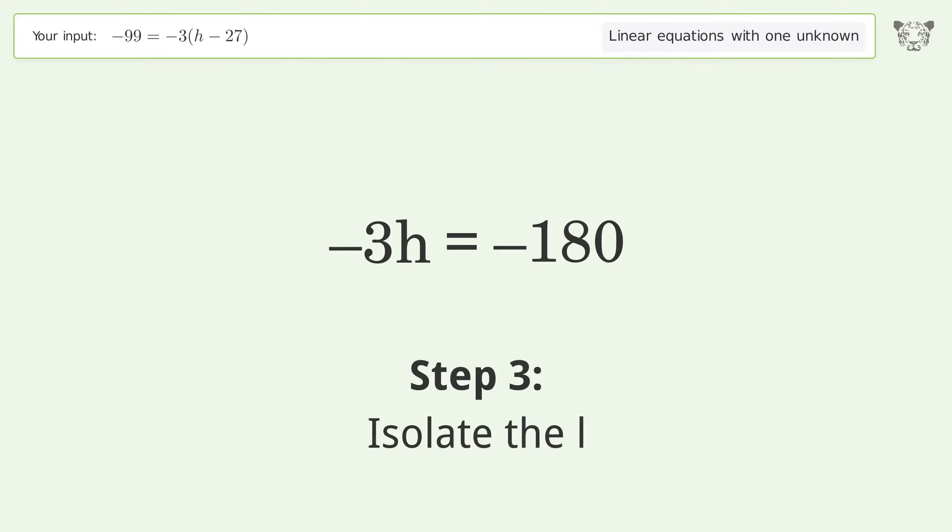Isolate the h. Divide both sides by negative 3. Cancel out the negatives.